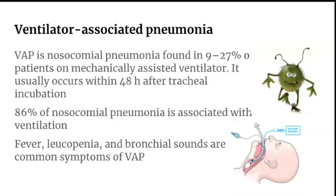Ventilator-associated pneumonia (VAP) is pneumonia that develops in patients placed on ventilators. VAP is a nosocomial pneumonia found in 9% to 27% of patients on mechanical ventilators — the highest percentage among HAI types. It usually occurs within 48 hours after tracheal intubation. 86% of nosocomial pneumonia is associated with ventilation, so any pneumonia developing after intubation is mostly considered nosocomial pneumonia or VAP.